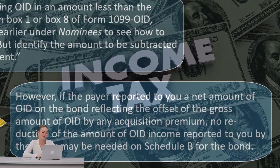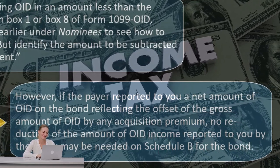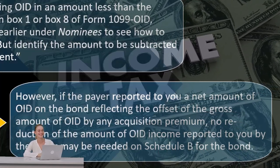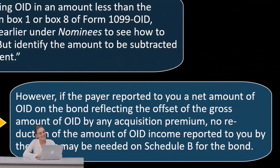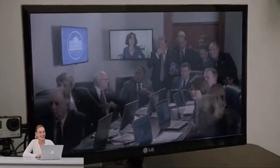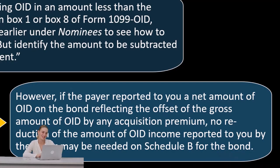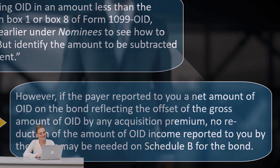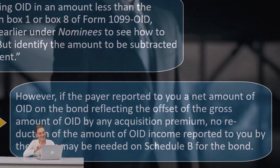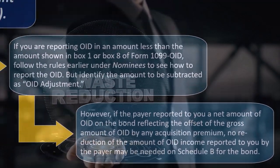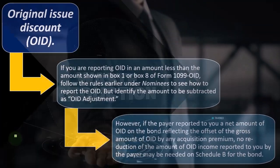However, if the payer reported to you a net amount of OID on the bond reflecting the offset of the gross amount of OID by any acquisition premium, no reduction of the amount of OID income reported to you by the payer may be needed on Schedule B for the bond.